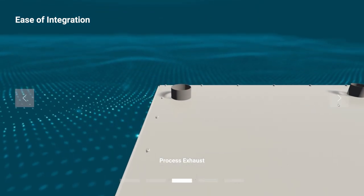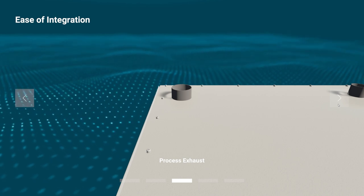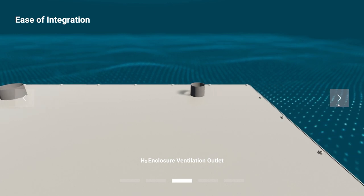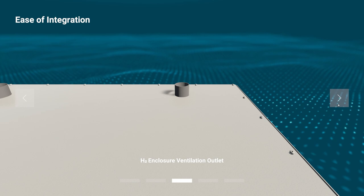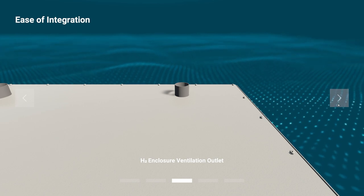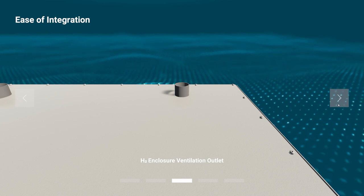Going further up, in the top of the FCWave, we have the process exhaust. Next to it, we have the H2 enclosure ventilation outlet. Both of these exhaust will need to be vented to the outside of the vessel. This completes the focus on the different connections.